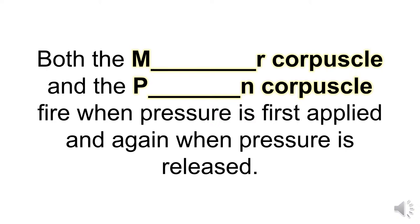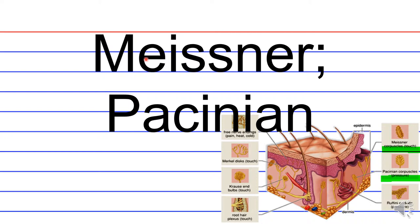Both the M-blank R corpuscle and the P-blank N corpuscle fire when pressure is first applied and again when pressure is released. So what type of corpuscles respond to this type of stimulation? This would be the Meissner corpuscle and the Pacinian corpuscle.